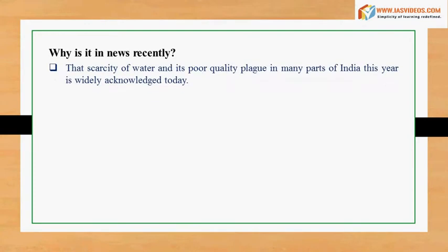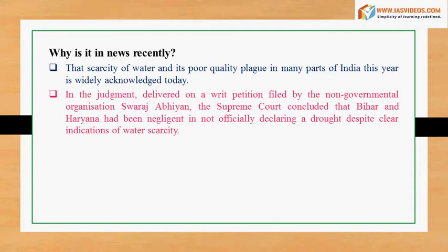Why is it in the news recently? The scarcity of water and its poor quality plaguing many parts of India this year is widely acknowledged. In the judgment delivered on a writ petition filed by the non-governmental organization Swaraj Abhiyan, the Supreme Court concluded that Bihar and Haryana had been negligent in not officially declaring a drought despite clear indications of water scarcity.